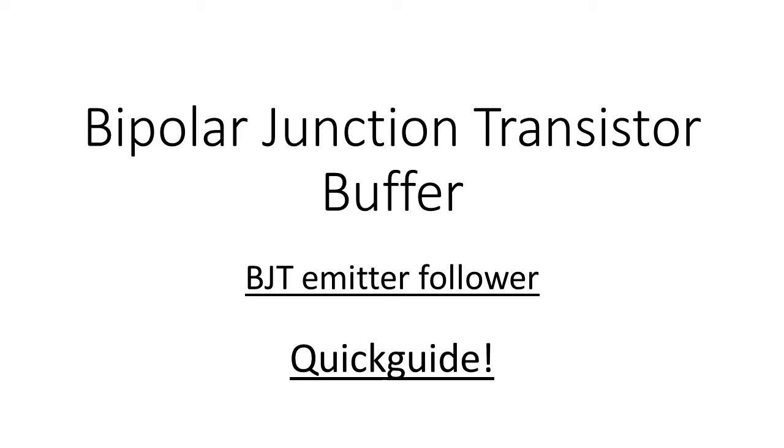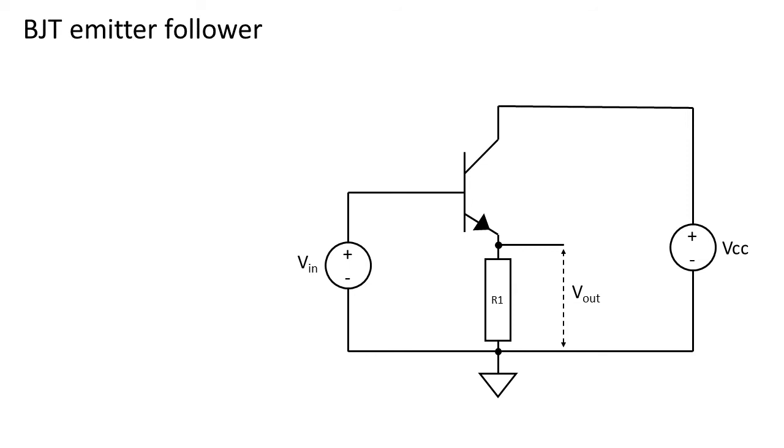The simplest buffer configuration will look something like this. A transistor is powered by a power supply with a voltage of Vcc. At the base of the transistor will be the signal that needs to be buffered, called VIN.